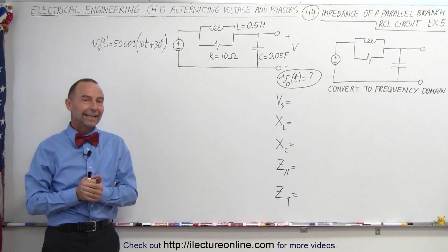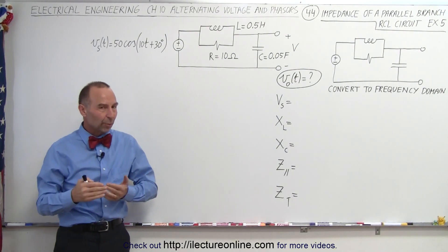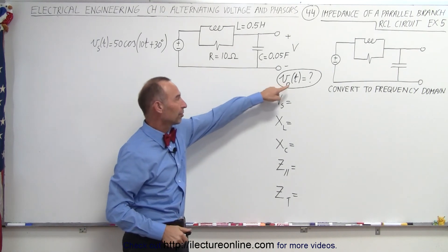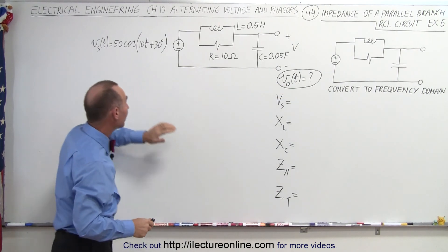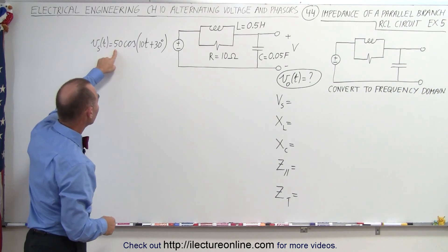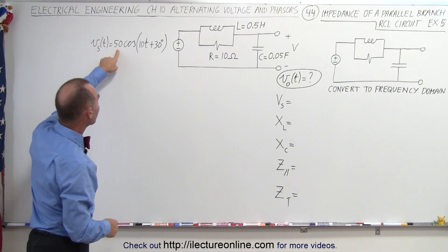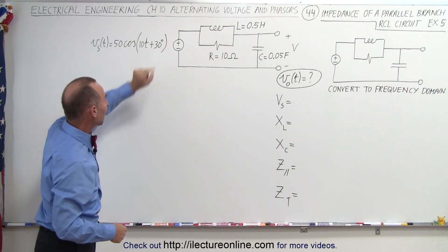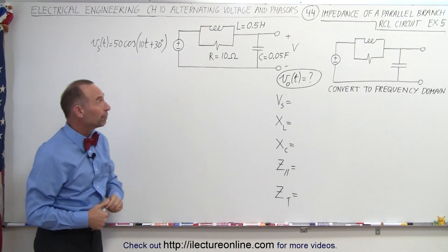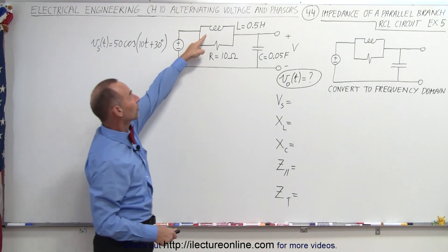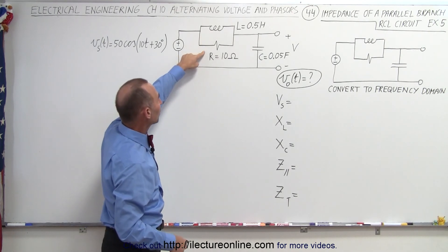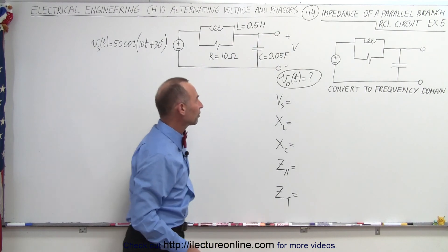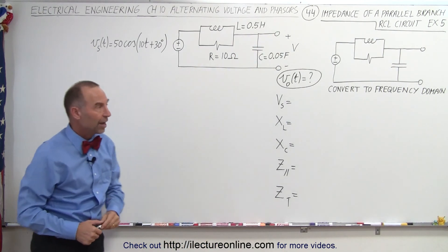Welcome to my lecture online. This problem is somewhat similar to the previous video. We're still trying to find the output voltage as a function of time when we have a time-varying voltage input at the source: 50 volt max, frequency angle of 10, and a phase angle of 30 on the input. We have an inductor in parallel with a resistor, and then a capacitor. We want to know the voltage across the capacitor as a function of time.